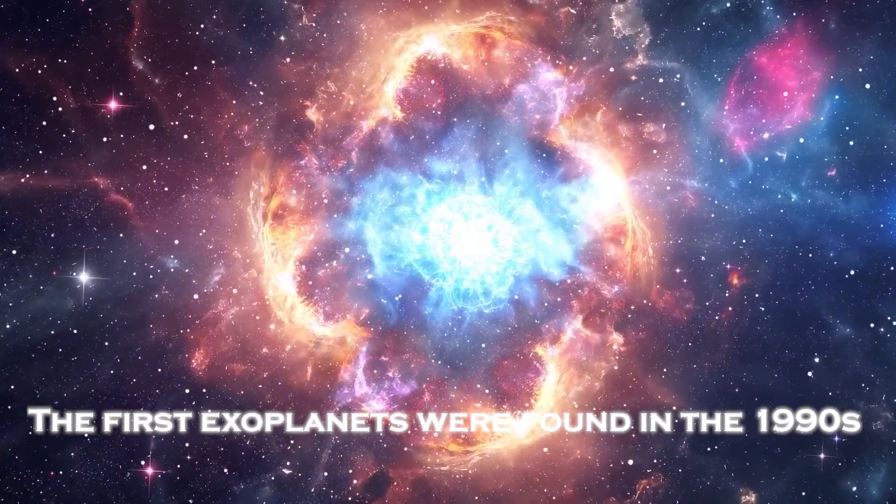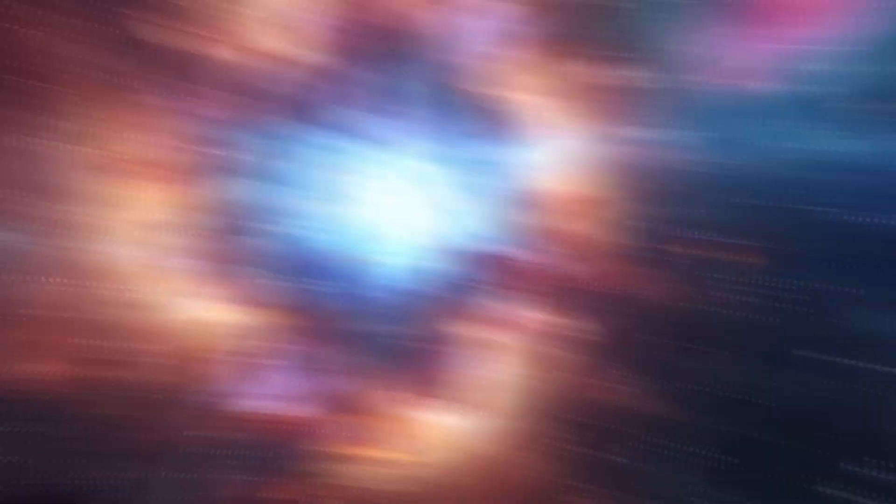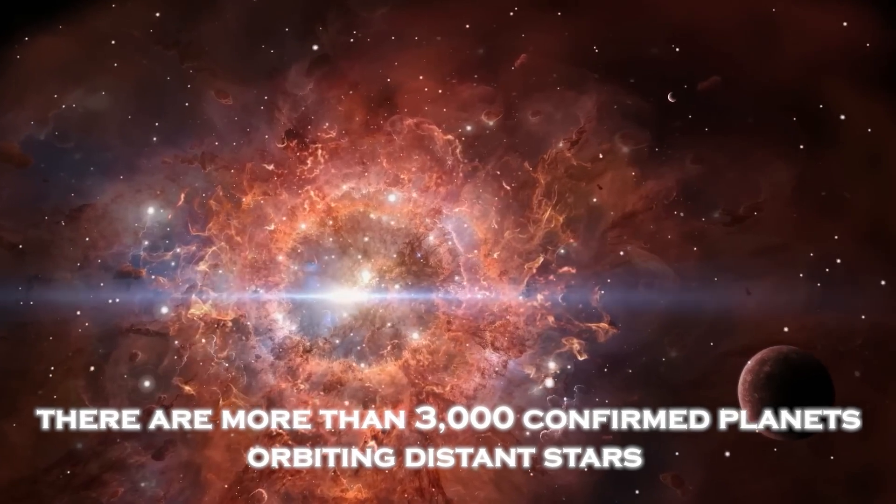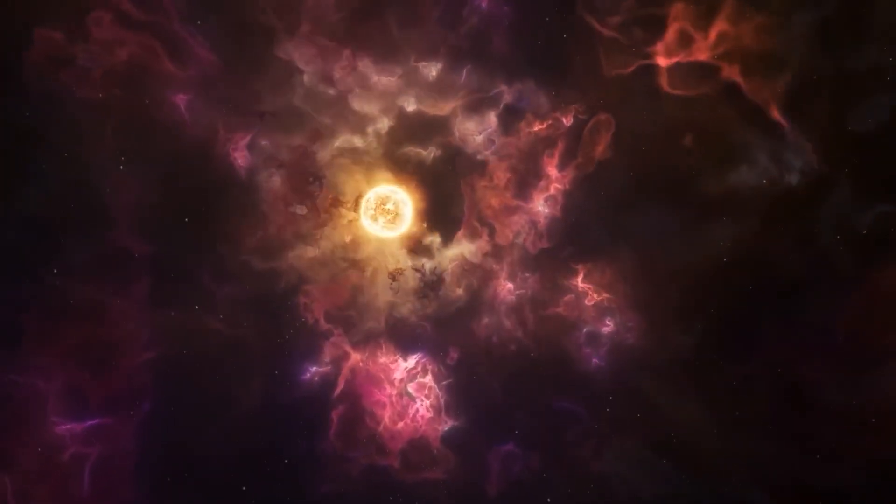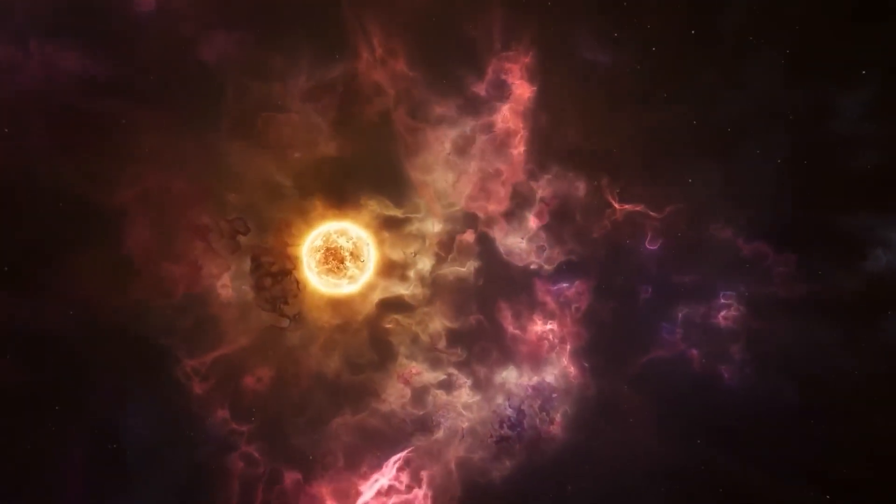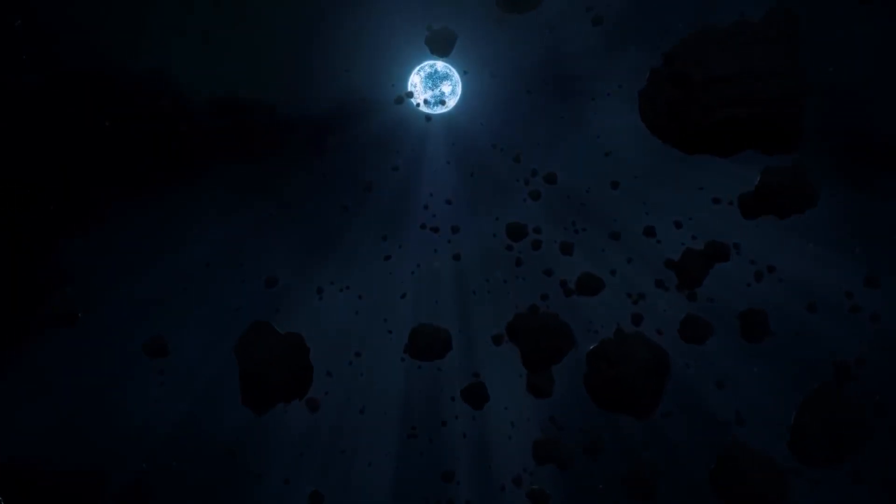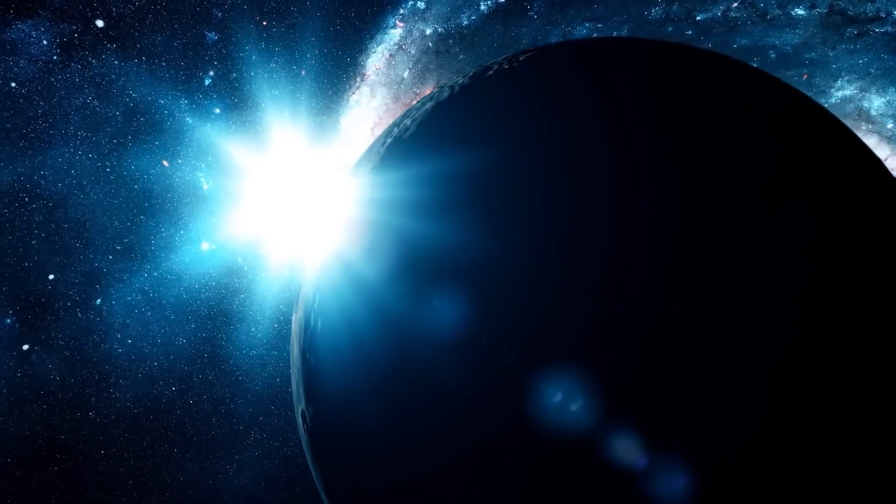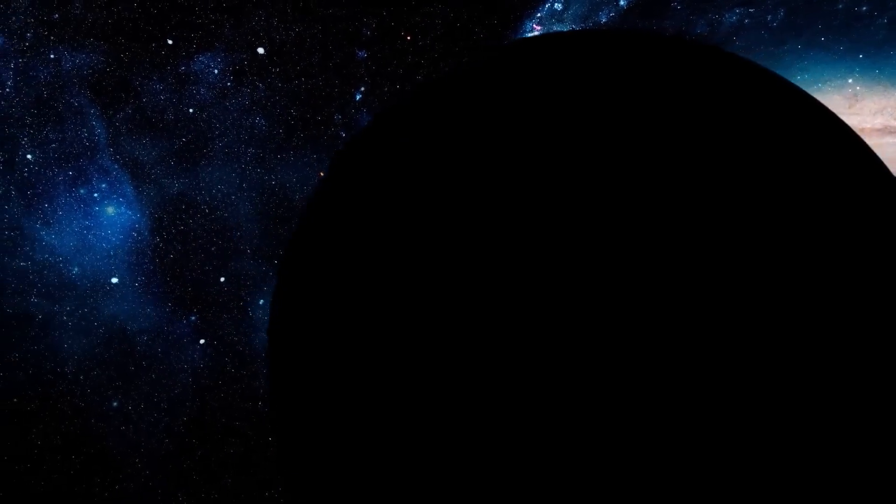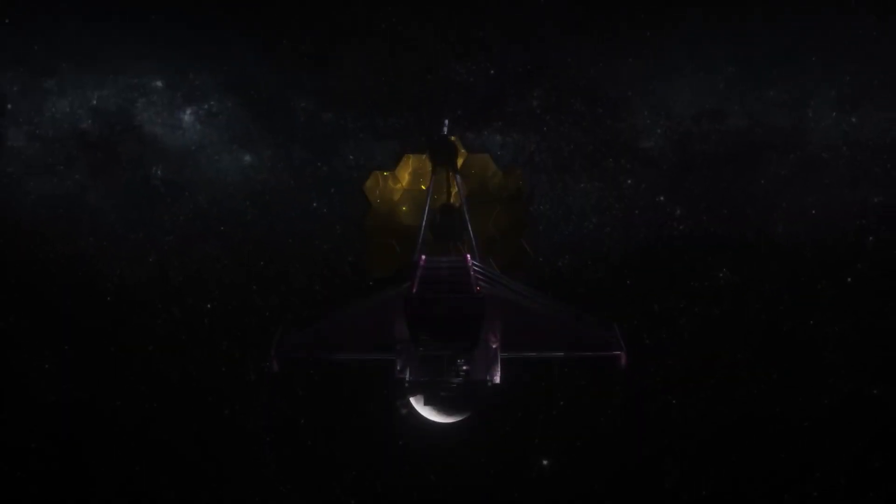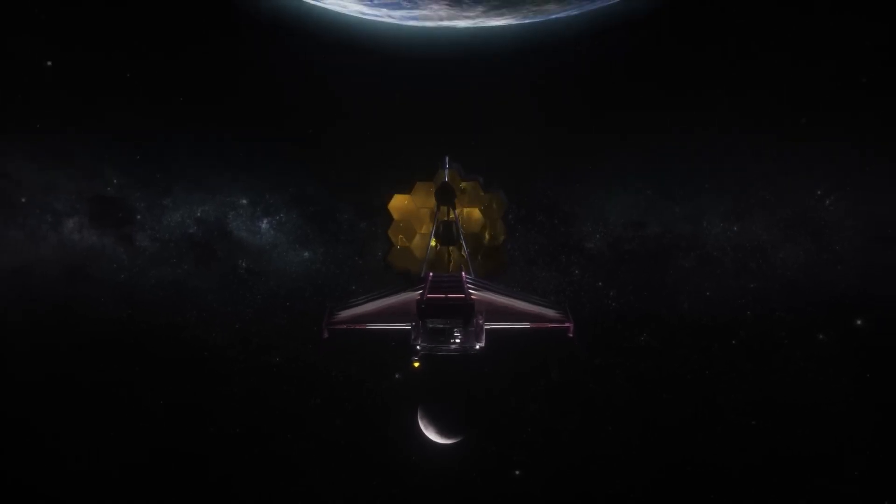The first exoplanets were found in the 1990s, and today there are more than 3,000 confirmed planets orbiting distant stars. However, only a dozen of them have been directly imaged. Most exoplanets are so far away that they can only be detected when the light from their host star is dimmed. The first direct image of an exoplanet was taken in September last year.